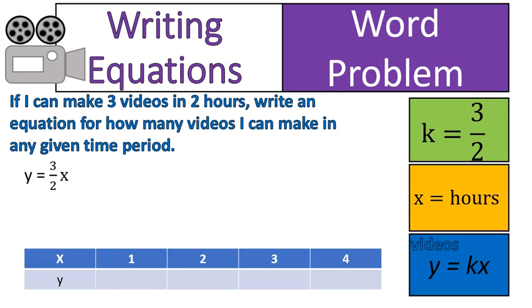Let me show you how that would look. If I have this table here and I'm told that I have one hour, two hours, three hours and four hours to make videos and ask how many videos can I make in that time period, I would use the equation that I've written and just substitute my value of x in and solve for my value of y.